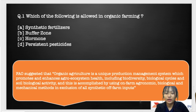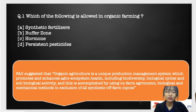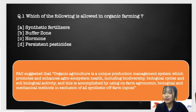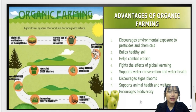In theory, organic farming is a farming system which does not promote any use of chemical fertilizers, herbicides, pesticides, or feed additives to livestock. The next slide has a few of the features and advantages of organic farming.